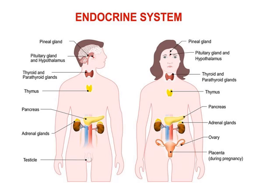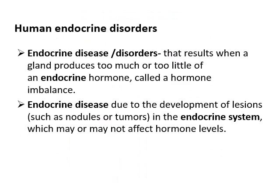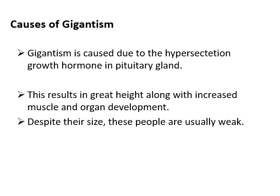Here we are going to study two such abnormal conditions caused by the growth hormone. Gigantism — the word means very big or large, so the person becomes very large in size. The height is normally seven feet and the person looks very big compared to normal human beings. Gigantism is caused due to the hypersecretion of growth hormone by the pituitary gland.